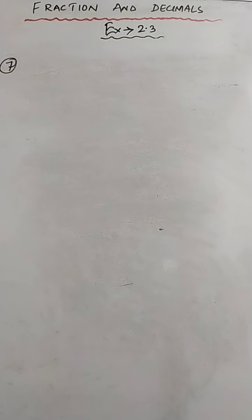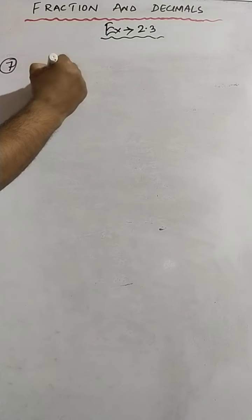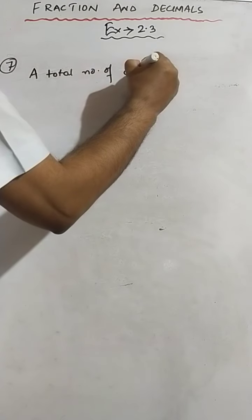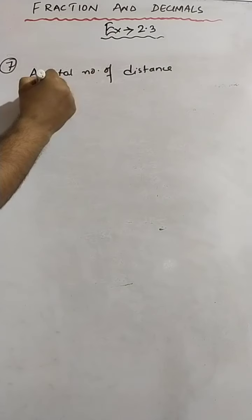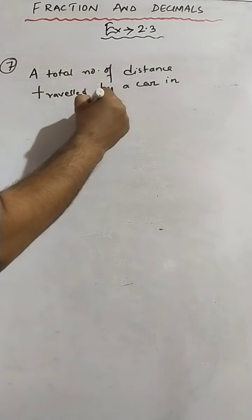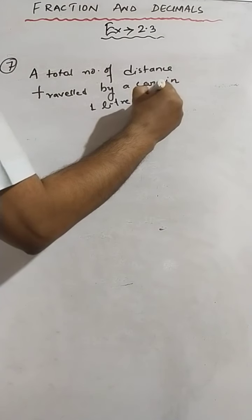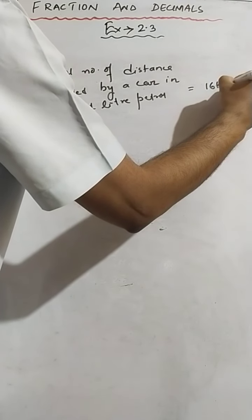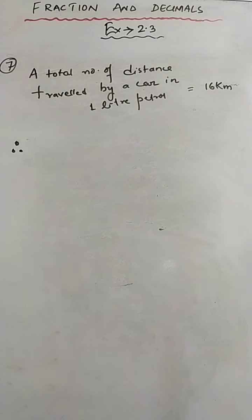The first sentence to write is: total distance traveled by a car in one liter of petrol equals 16 kilometers. Therefore, total distance traveled by a car in two and three-quarter liters of petrol equals 16 multiplied by two and three-quarters.